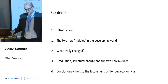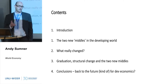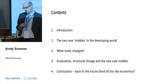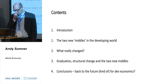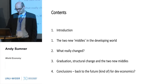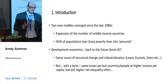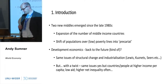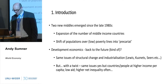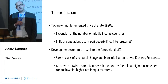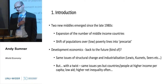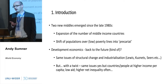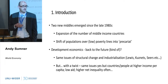The presentation outlines the two middles and then talks about what really changed, because the two middles are based on drawing lines for poor countries and poor people to generate the thesis. The first middle is an expansion in the number of middle-income countries. Since the late 1980s, the total number has increased by about 40. There's also been a shift of populations above very low poverty lines of one or two dollars a day into what might be referred to as the precariat — a precarious group not far from poverty.